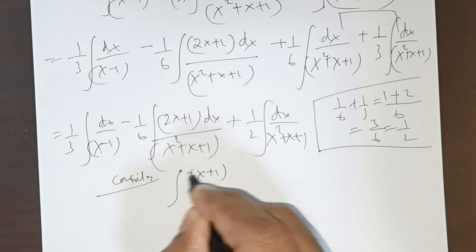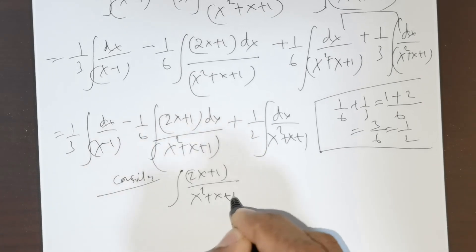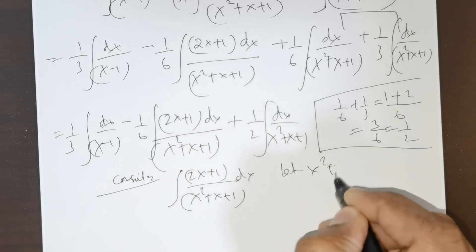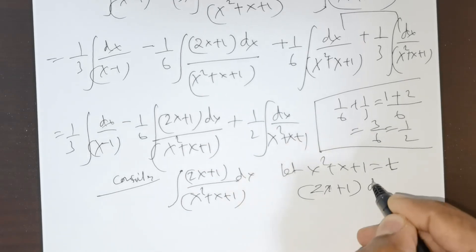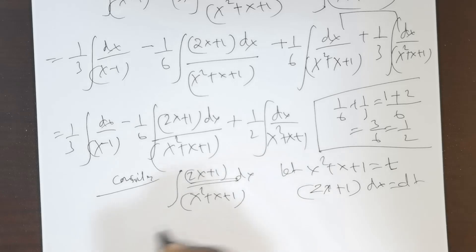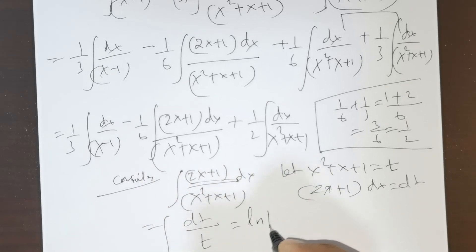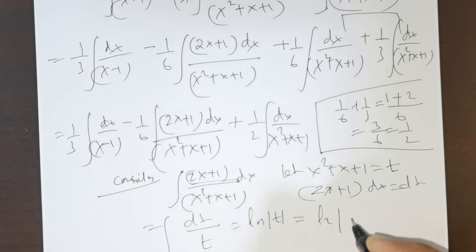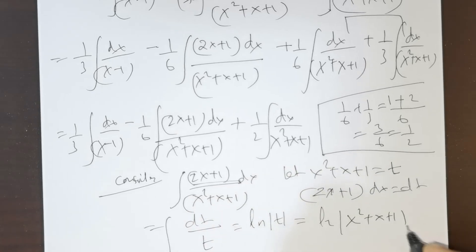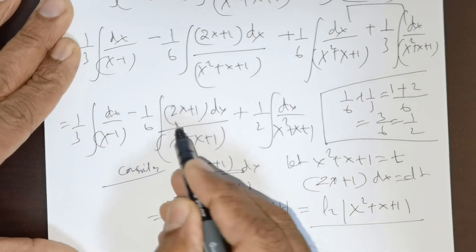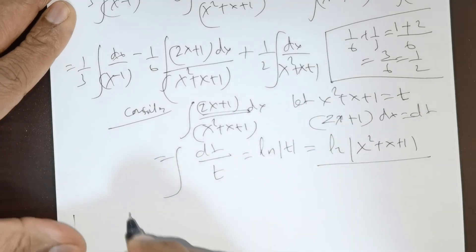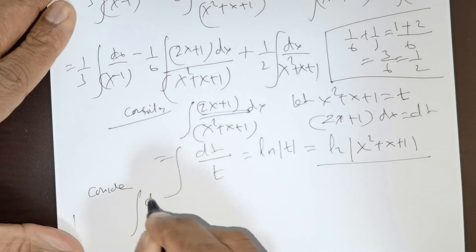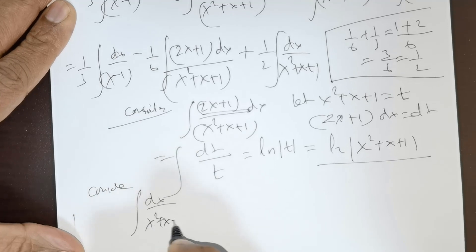For the integral of (2x plus 1)/(x² plus x plus 1) dx, let t equal x² plus x plus 1. Then dt equals (2x plus 1)dx, so the integral becomes ∫dt/t, which equals ln|t|, that is ln|x² plus x plus 1|.